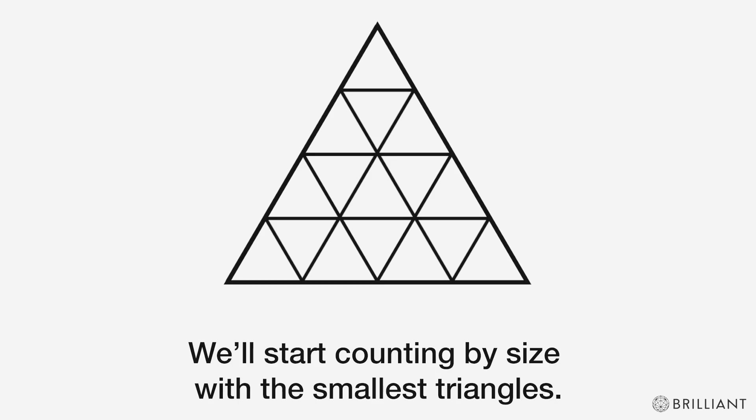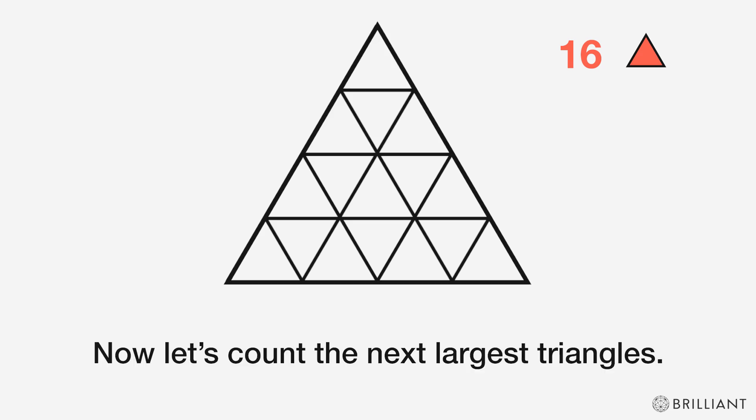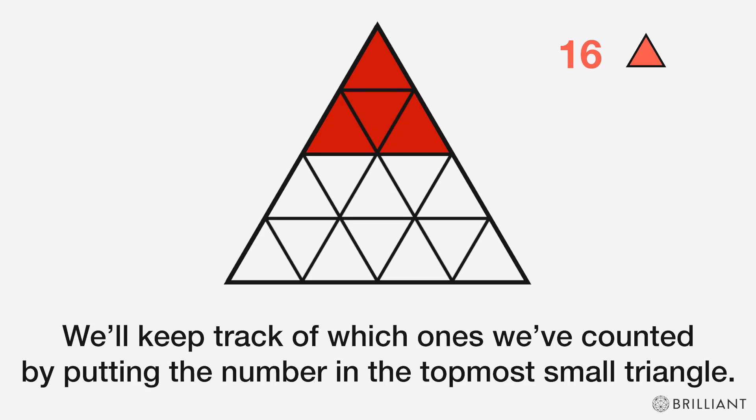We'll start counting by size with the smallest triangle. There are 16 of them. Now let's count the next largest triangles. We'll keep track of which ones we've counted by putting the number in the topmost small triangle.